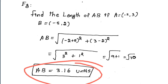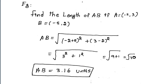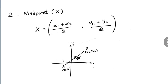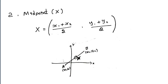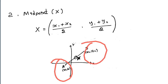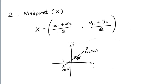The next one is midpoint. The midpoint is the middle point. In midpoint, we can add two points. The formula is: x1 plus x2 divided by 2, and y1 plus y2 divided by 2.